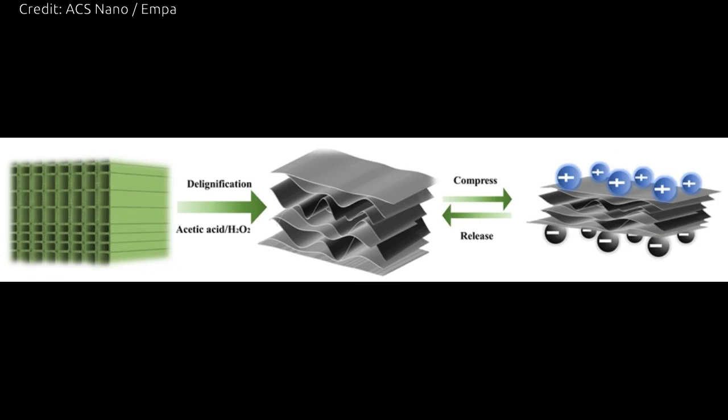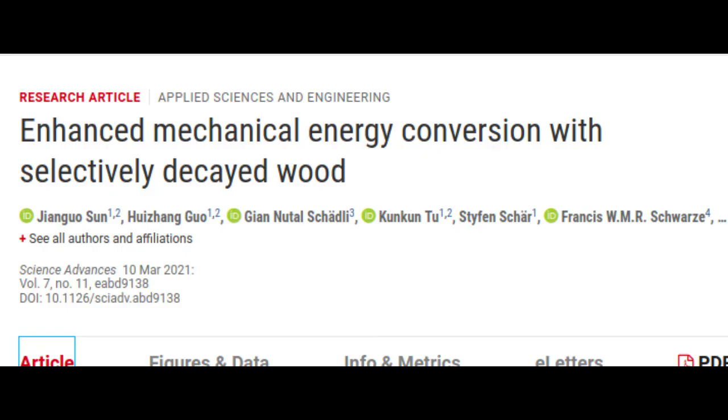For instance, they have already developed high-strength water-repellent and magnetizable wood. Now, the team has developed a simple, environmentally friendly process for generating electricity from a type of wood sponge, as they reported in the journal Science Advances.